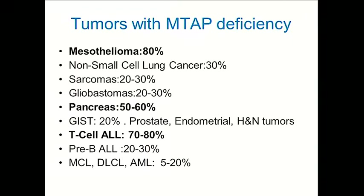MTAP is deleted in a large number of cancers. A couple of cancers in particular have a very high percentage of MTAP deficiency: mesothelioma, pancreatic cancer, and there's new information in glioblastomas — it's deleted in almost 50% of these tumors. In T-cell leukemia and lymphoma, there's also a very high level of MTAP deficiency, and that's an area we're particularly interested in.